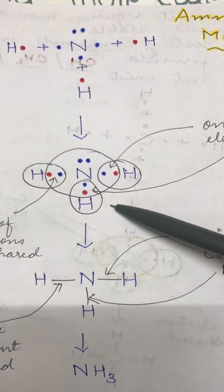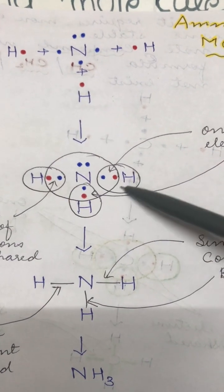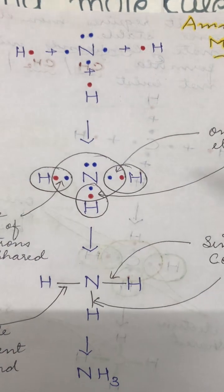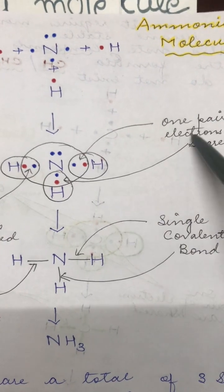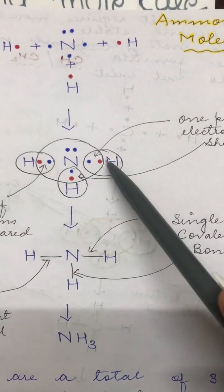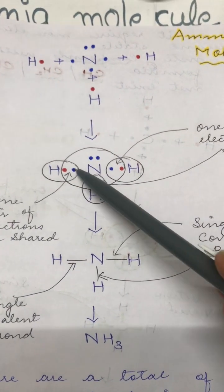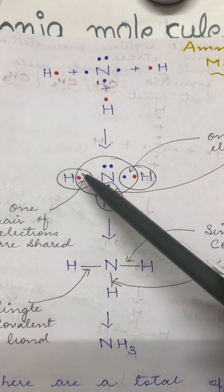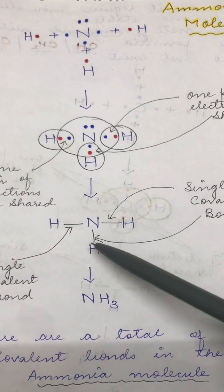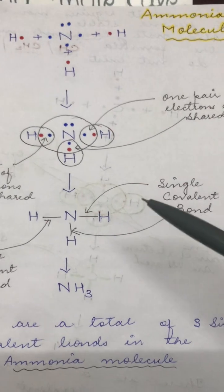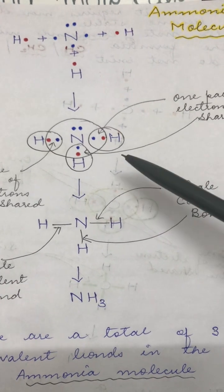To show this in the form of bonding, we draw circles showing the completion of the duplet by hydrogen and the completion of the octet by nitrogen. One pair of electrons is shared between nitrogen and the first hydrogen atom, another pair between nitrogen and the second hydrogen, and a third pair between nitrogen and the third hydrogen atom.